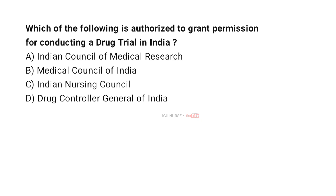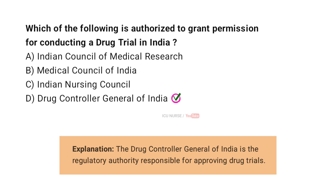Which of the following is authorized to grant permission for conducting a drug trial in India? A. Indian Council of Medical Research. B. Medical Council of India. C. Indian Nursing Council. D. Drug Controller General of India. And the correct answer is D. Drug Controller General of India. The Drug Controller General of India is the regulatory authority responsible for approving drug trials.